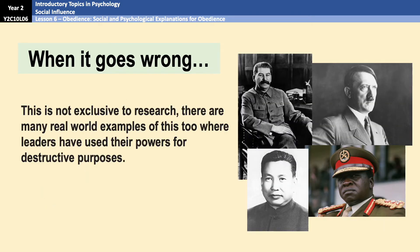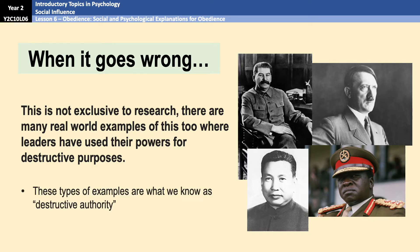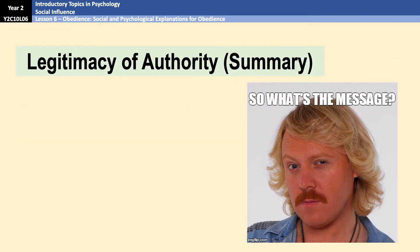What we saw in Milgram's research is only a small example of how things can go very badly. There are plenty of real-world examples of legitimate authority figures using their power for destructive purposes — known as destructive authority. Go back through the history books and take your pick of Hitler, Stalin, Idi Amin, Pol Pot, or Kim Jong-un. There are many destructive authority figures, old and new, using their authority in a negative way. That is the legitimacy of authority.